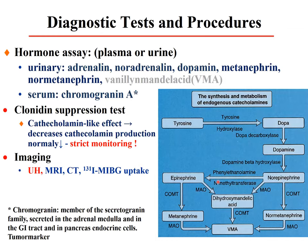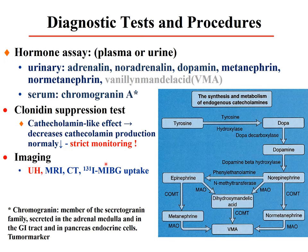Diagnosis: because catecholamines are not continuously elevated, measuring adrenaline, noradrenaline, or dopamine directly may be inappropriate. Instead, measure metabolites such as vanillylmandelic acid in urine, or chromogranin A as a tumor marker associated with pheochromocytoma, or use a clonidine suppression test with alpha-blockers. Imaging: ultrasound, MRI, CT, or scintillation scan — especially useful when the tumor is in the paravertebral ganglion rather than the medulla. Treatment is surgical removal.